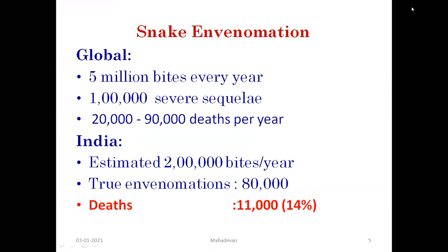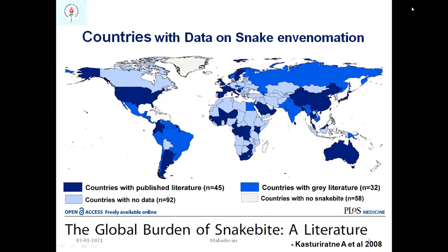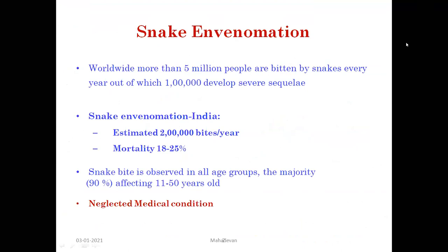The factualness is not just for getting funds — it is to understand the real burden and the trend of a particular problem. Do all countries have snakebite envenomation data? Data is important, and the global burden of snakebite is being periodically tracked as we are now doing for COVID. Snakebite is observed in all age groups; the majority are between 11 and 50 years because people are very active and children are exploring.